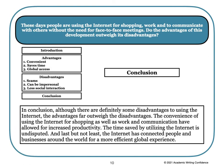Now we need to write our conclusion paragraph. We might write something like this: 'In conclusion, although there are definitely some disadvantages to using the internet, the advantages far outweigh the disadvantages. The convenience of using the internet for shopping, as well as work and communication, have allowed for increased productivity. The time saved by utilizing the internet is undisputed. And last but not least, the internet has connected people and businesses around the world for a more efficient global experience.' We can also use transition words in our conclusion paragraphs, such as 'in conclusion,' 'in summary,' or 'as can be seen.'